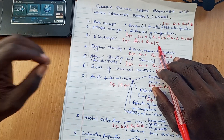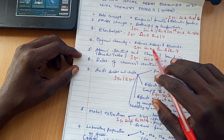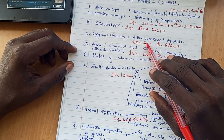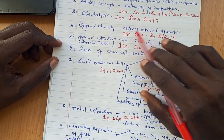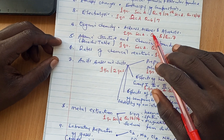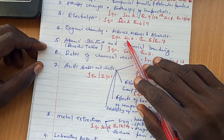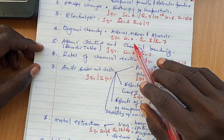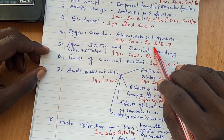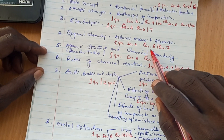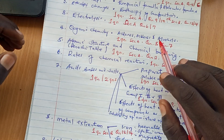The fourth topic is organic chemistry. The key areas to revise in detail are alkanes, alkenes, and alcohols. In most cases, they bring one question on these three classes of hydrocarbons. If it comes in section A, it is either question number 7 or question number 8 — most commonly question number 8. Please revise organic chemistry in detail, especially alcohols, alkenes, and alkanes.